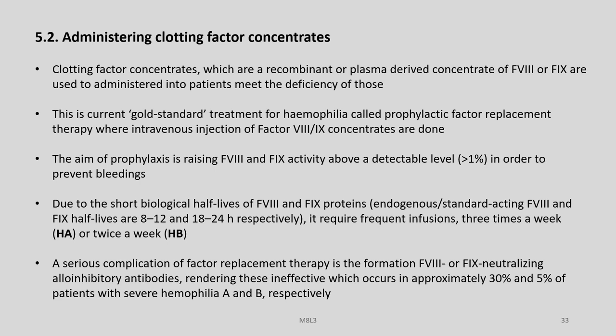Another conventional therapy is administration of clotting factor concentrates. Clotting factor concentrates, which are recombinant or plasma-derived concentrates of factor 8 or 9, are used to address the deficiency of these factors. This is currently the gold standard treatment for Haemophilia, called prophylactic factor replacement therapy, where intravenous injection of factor 8 or 9 concentrates are given. The aim of prophylaxis is raising factor 8 and factor 9 activity above a detectable level in order to prevent bleedings, due to the short biological half-lives of these proteins.